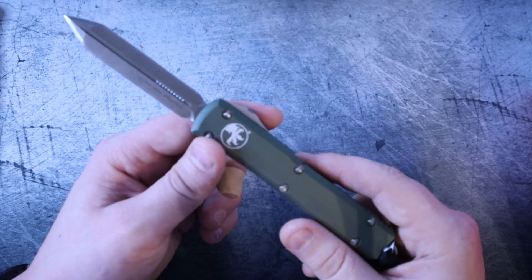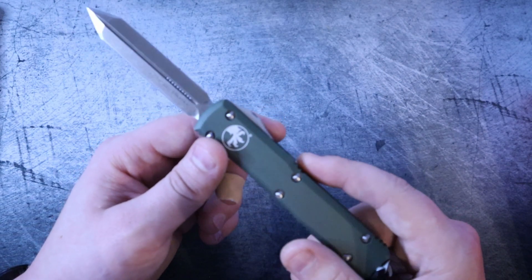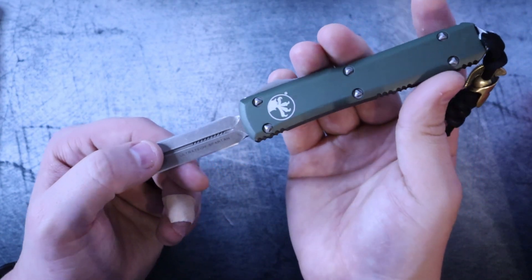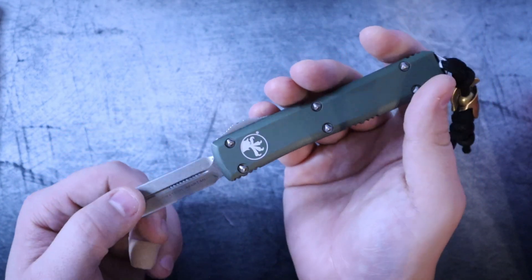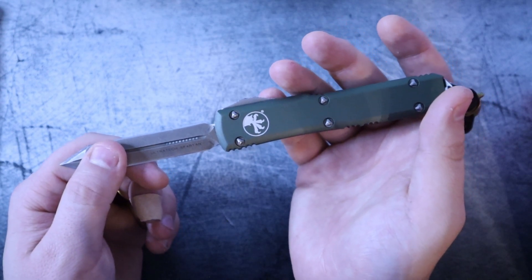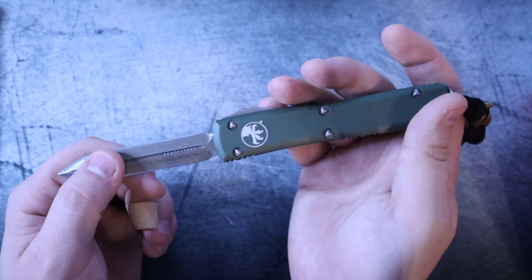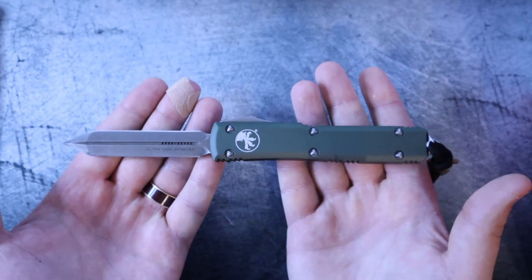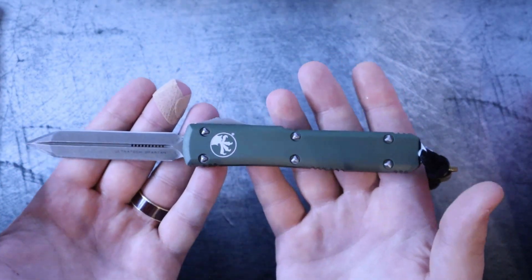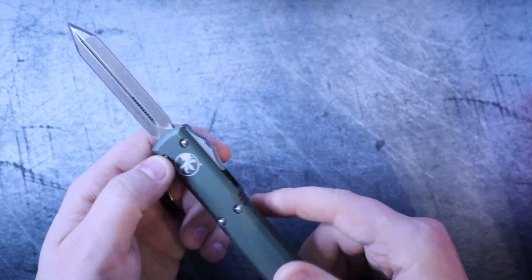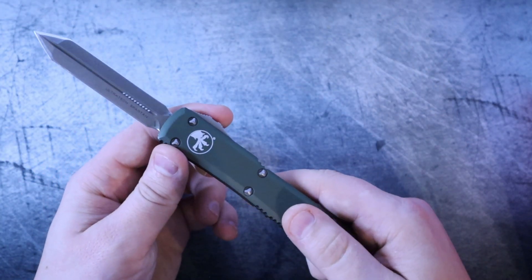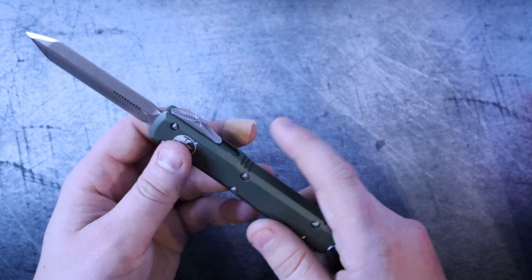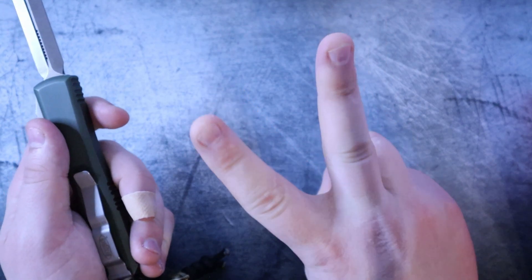First reason why this is the best out-the-front carry. I want you to consider the biggest, most popular knife reviewing channels out there. Every time they review an out-the-front knife that's not a microtech, you will see an ultratech in that video. You know why? Because this is the measuring stick for which all other OTFs are measured by. You can buy that knife, or you can have the knife that everything gets compared against. There's reasons for that. Speaking of reasons, reason number two.